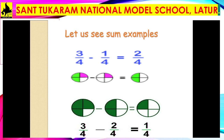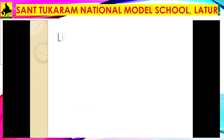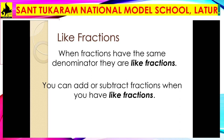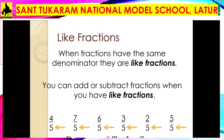It is quite easy to solve examples like this. Let's review: what are like fractions? Fractions having the same denominator are called like fractions. You can add or subtract fractions only when they are like fractions. Now check these fractions: 4/5, 7/5, 6/5, 3/5, 2/5, and 5/5. All have the same denominator, which is 5, so these are like fractions. You can find their sum or difference. First, always check whether the given fractions are like or unlike.